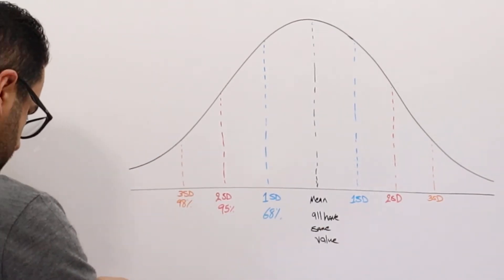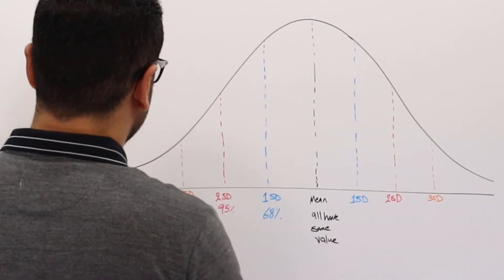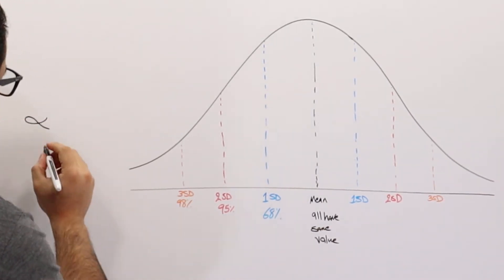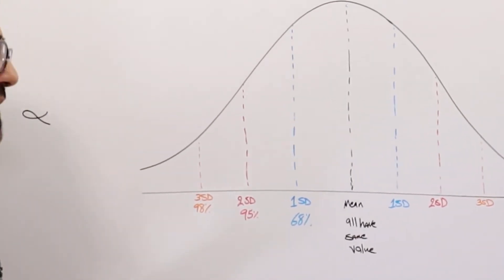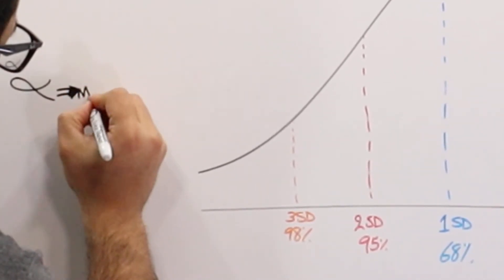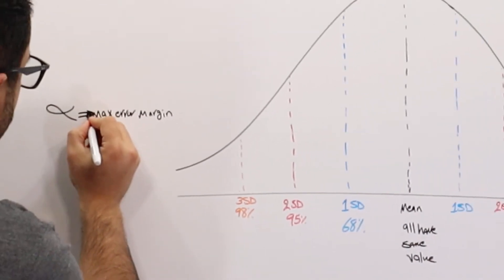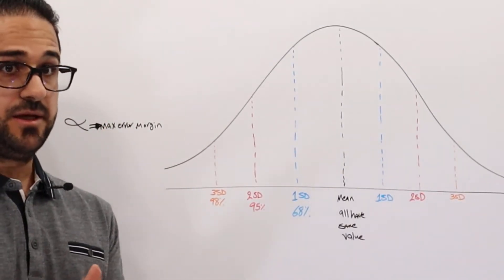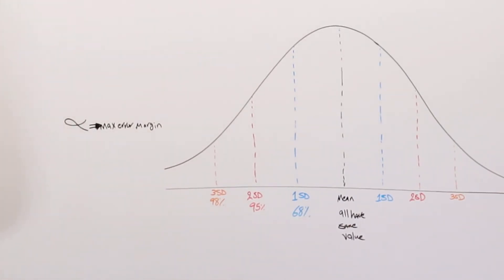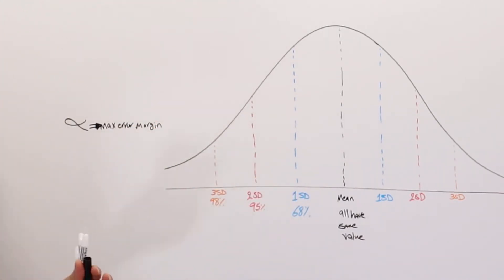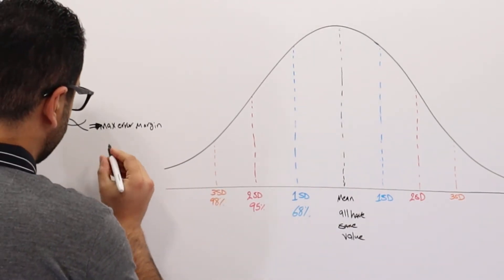So what is alpha? Alpha is basically the maximum error margin. When researchers are developing a clinical study and trying to prove that a medication is better than a placebo or the one in the market, they allow a maximum error margin in the study. This alpha is the max error margin, and it is basically set by the researcher. Usually what they set it to is 5% — so there is a room of 5% error to happen in the study.